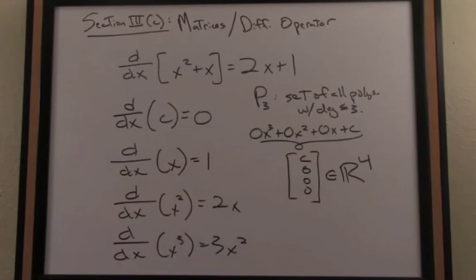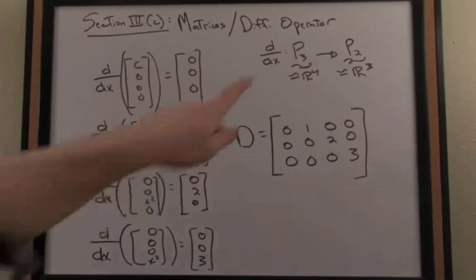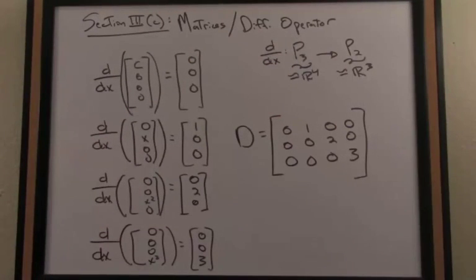Now I'd like to do that same encoding for each of these functions, and then from there, form, once again, the standard matrix for the transformation representing differentiation. I've gone ahead now and worked out the encoded forms, that is, the vector forms, of the derivatives of what are called these basis functions for the vector space P3, again, the set of all cubic or lesser degree polynomial functions.